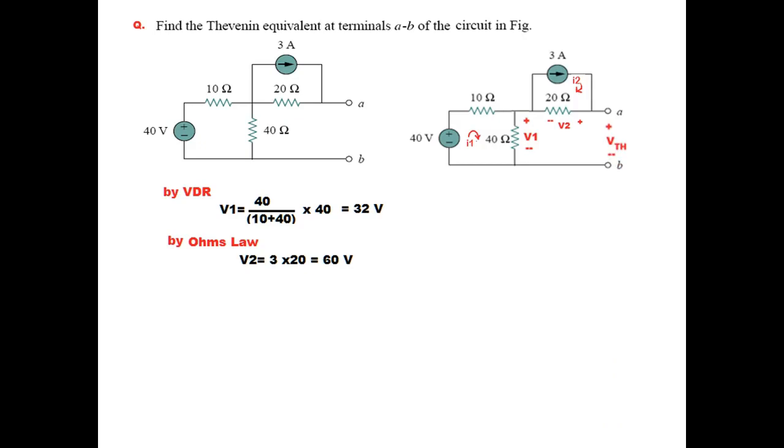Now we can easily find VTH. If you look at the circuit, by simple KVL method we can find VTH. By KVL: minus V1, minus V2, plus VTH equals zero.